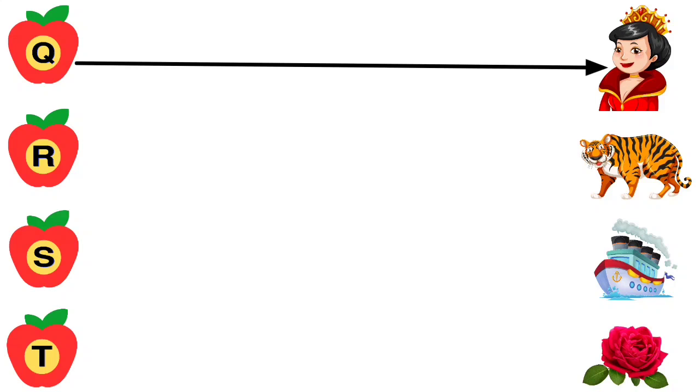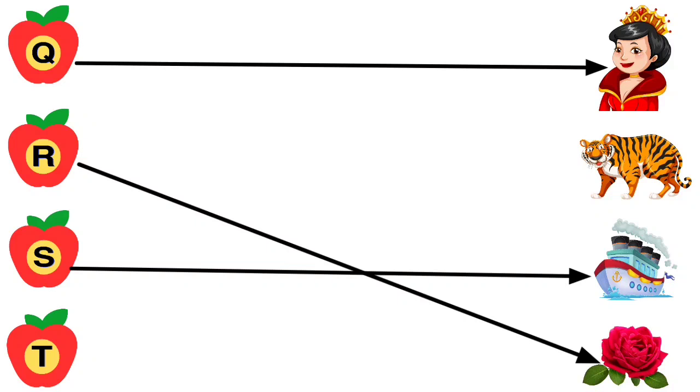Q for Queen, R for Rose, S for Ship, T for Tiger.